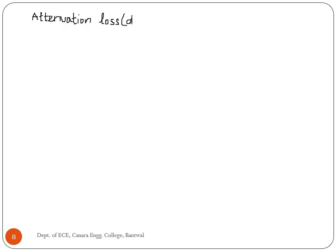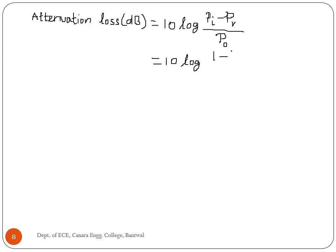Transmission loss or attenuation loss in dB is equal to 10 log((P_I − P_R) / P_0), which is equal to 10 log((1 − |S11|²) / |S12|²).